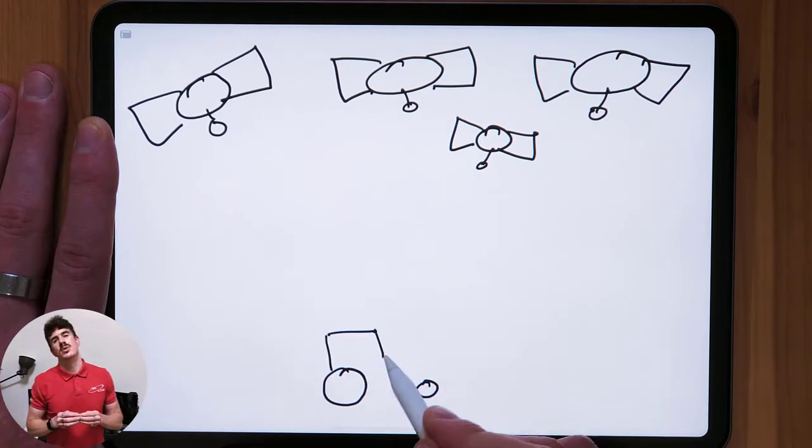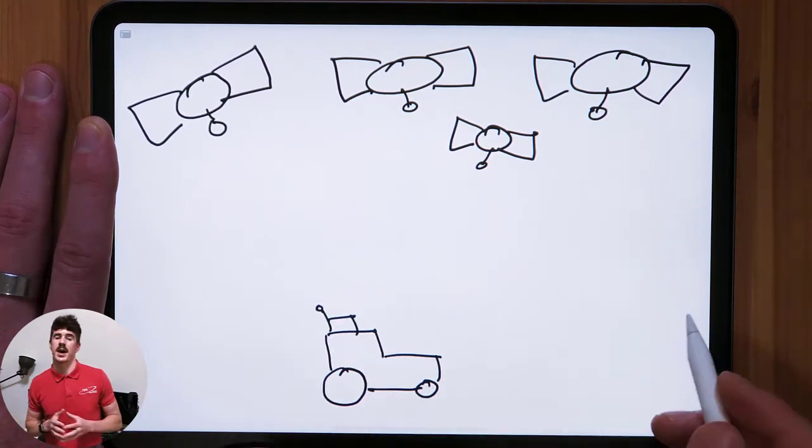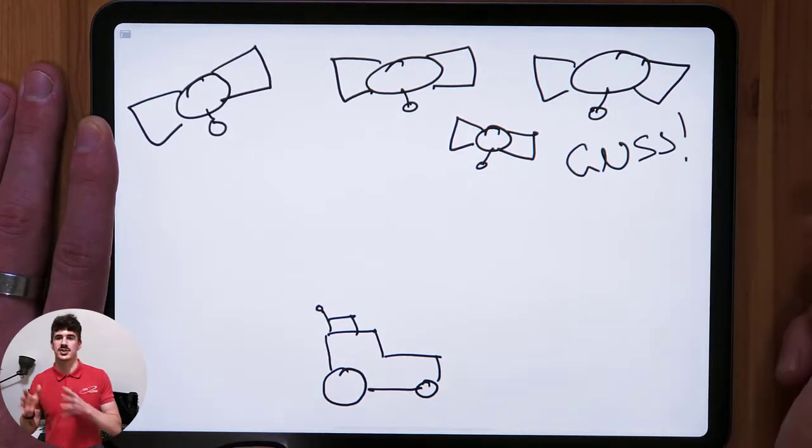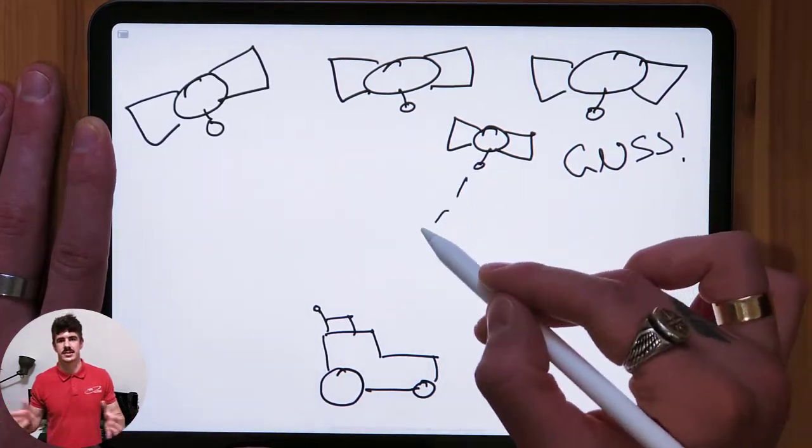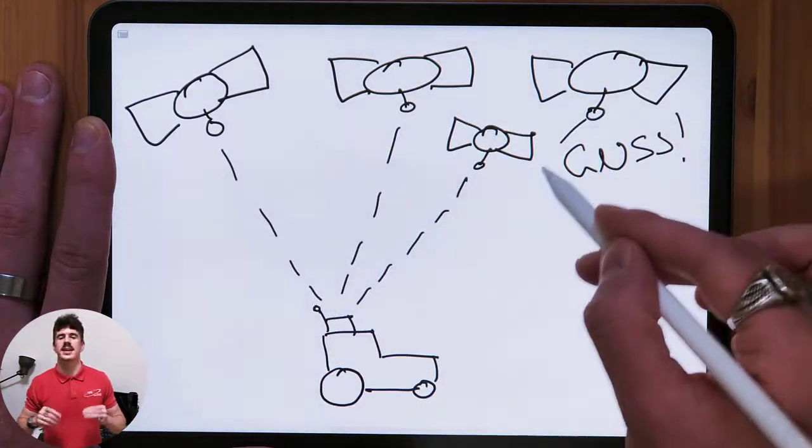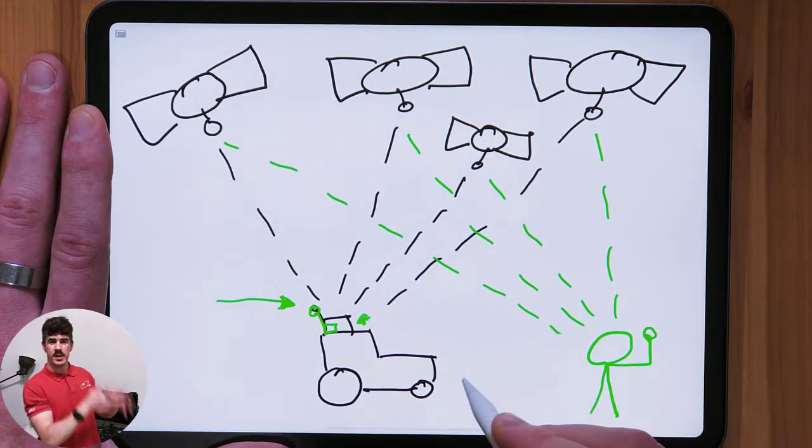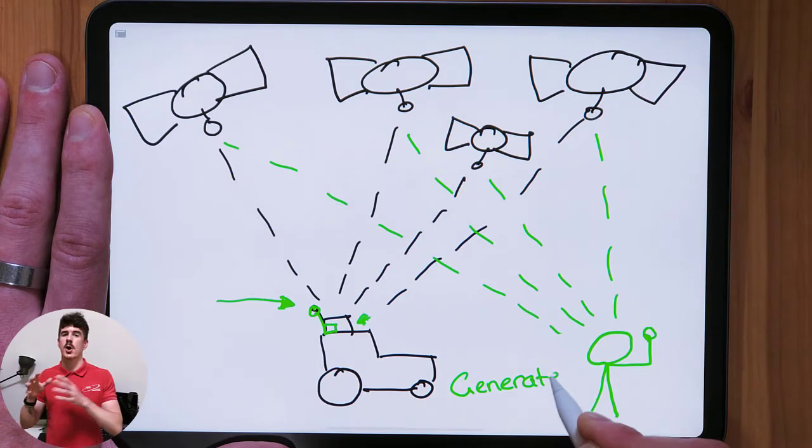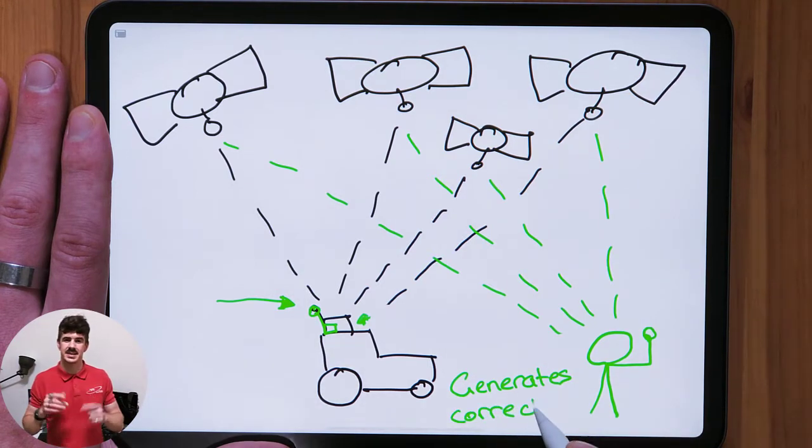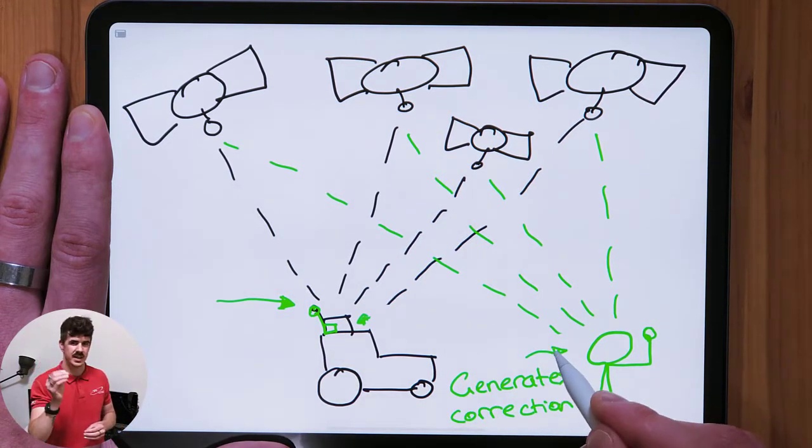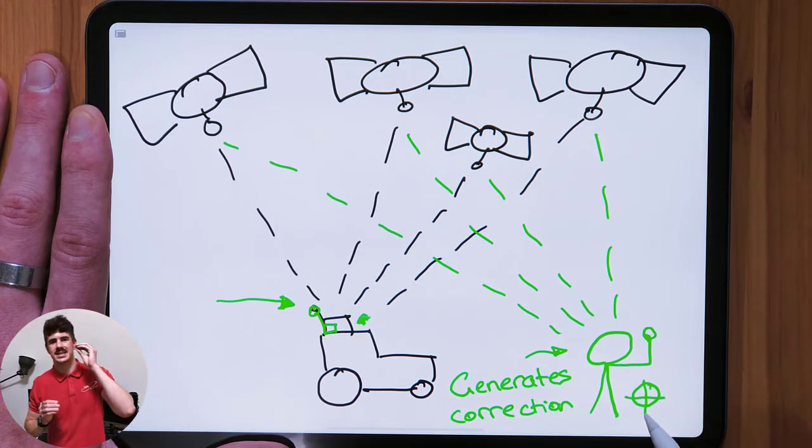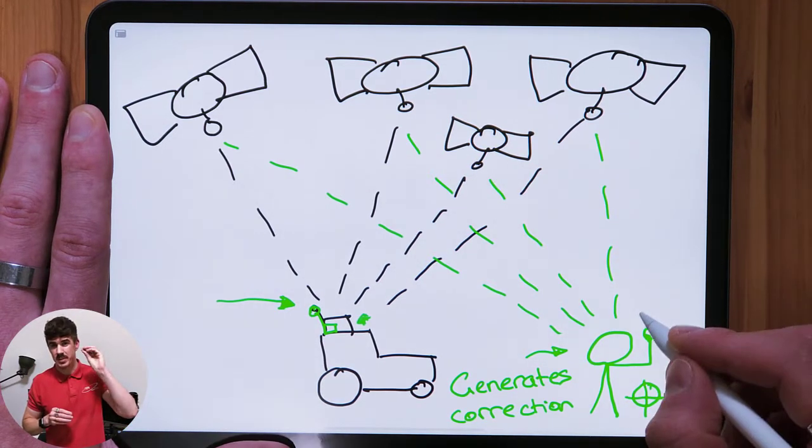So how does it work? Well, the starting point is always the same. A receiver on your machine and GNSS satellite signals. With RTK, we then introduce that base station. The base station can be in a fixed format or it can be in a mobile format. But the key is that when that base station is working, it's stationary with a known position.